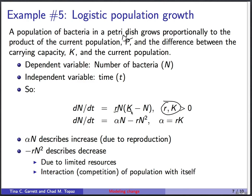To build intuition, let's expand this. Calling the product of r and K a new number alpha for convenience, we can write dN/dt equals alpha N minus r N squared.